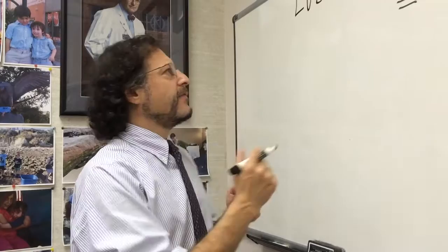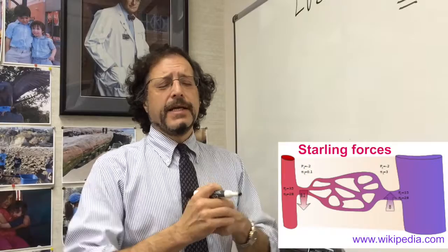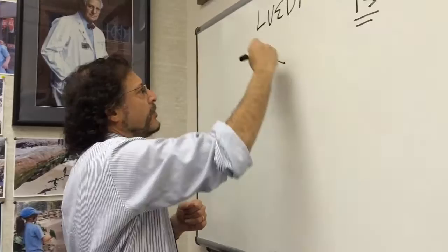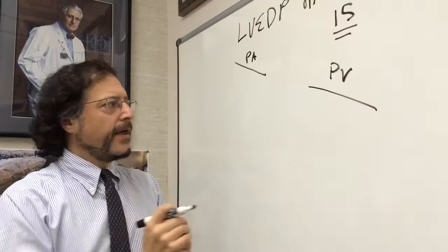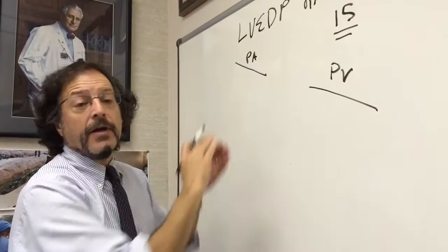This is called the waterfall effect or phenomenon, because the pulmonary capillary bed is subject to Starling forces and its elasticity and distensibility. If we have over here pulmonary artery pressure and over here pulmonary venous pressure, the misconception is that this is a straight line of rigid pipes and that as pulmonary venous pressure goes up, it's directly transmitted to the pulmonary artery. This is not correct.